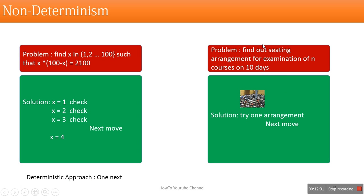Now if we are going to find a seating arrangement for the examination of n courses over 10 days, and we try all options, it will take decades or thousands of years and we don't have that much time — especially if we only have a 6-month semester. So what we do: we take a random seating arrangement and see whether this arrangement meets our requirement or not. In this solution approach we are taking every seating arrangement randomly — we don't know, after trying one arrangement, what the next one will be. This is known as the non-deterministic approach.